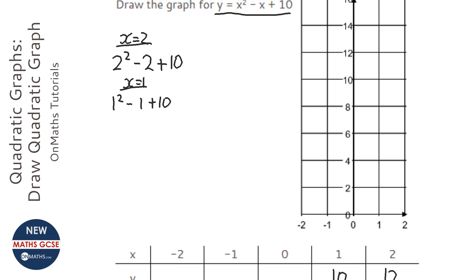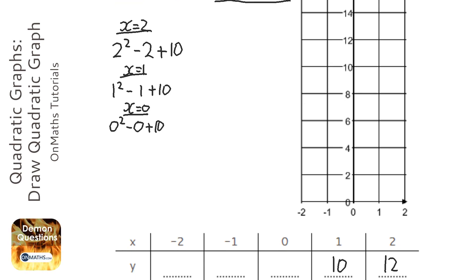Then when x is 0, it's going to be 0 squared take away 0 plus 10, which is obviously going to be 10.